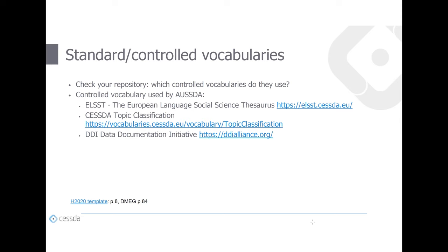Standardized or controlled vocabularies are another important aspect for interoperability. Controlled vocabularies mean that metadata are structured in a specific way — you can think of them as codes that you can use for your metadata. This facilitates describing metadata and matching the metadata of your research data with other research data, so you always use comparable keywords. Controlled vocabularies used by AUSTER include the European Language Social Science Thesaurus and topic classifications provided by the Data Documentation Initiative.